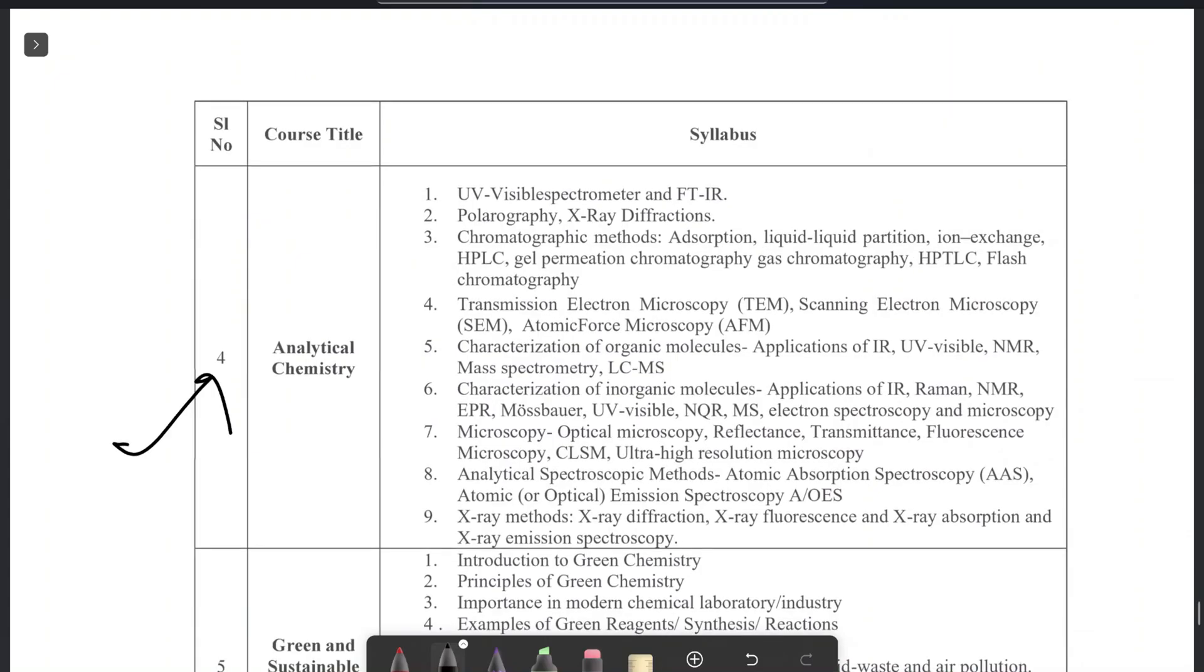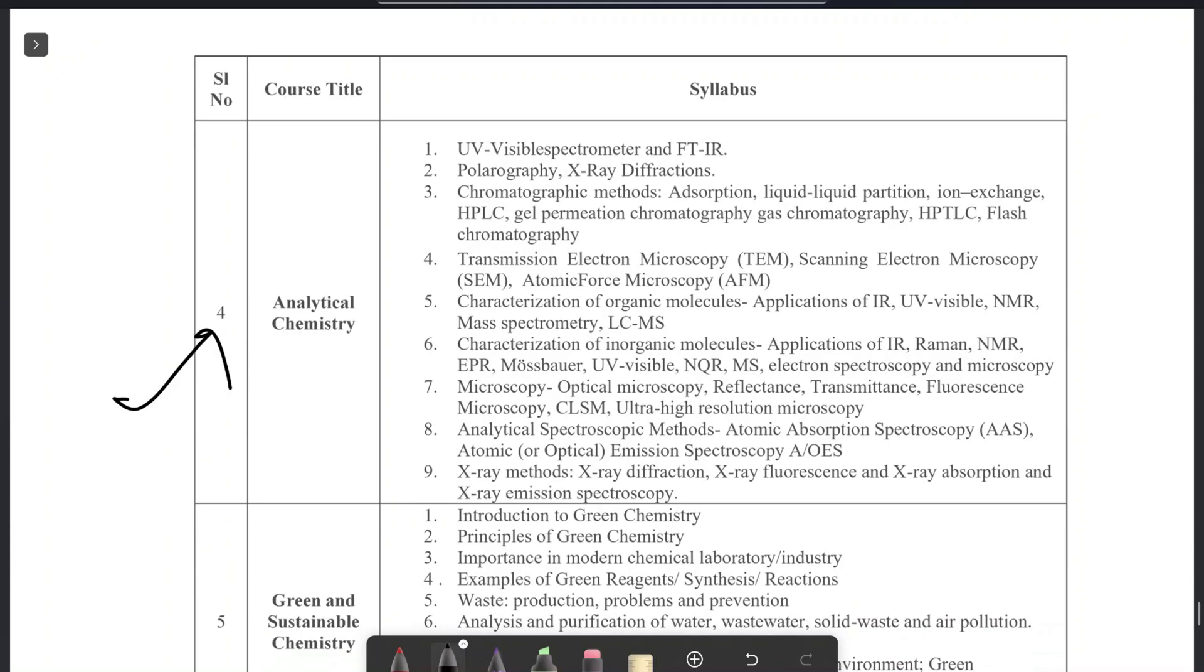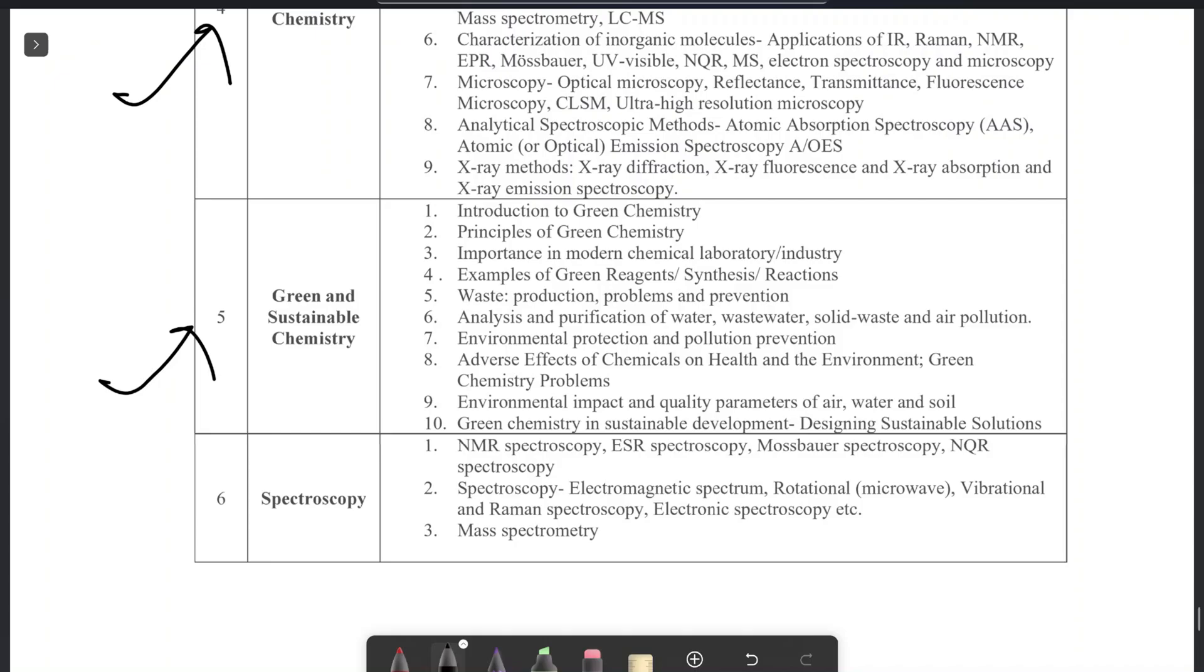Now we have analytical chemistry. There are multiple books for analytical chemistry. One of the very good books is for green chemistry. There is a book called Hanley, Green Chemistry Sustainable Chemistry. So these topics are briefly covered in the book called Hanley.